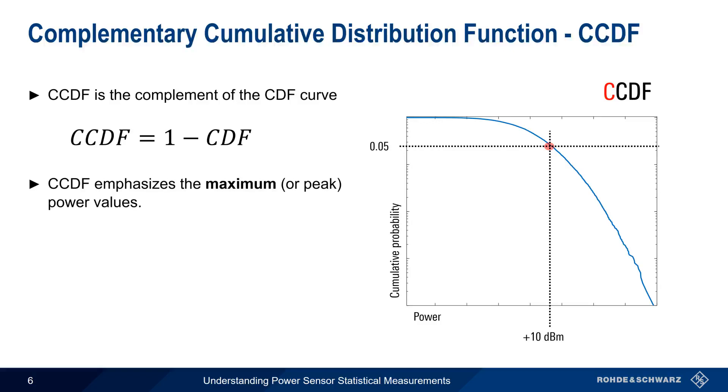Because we're usually more concerned with maximum power than minimum power values, CCDF is the most common and the most important of the three statistical measurements we've discussed.